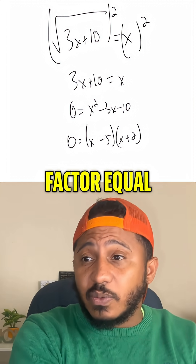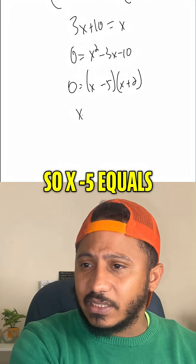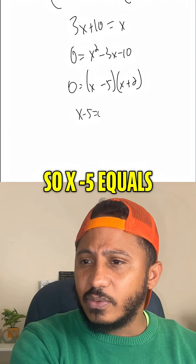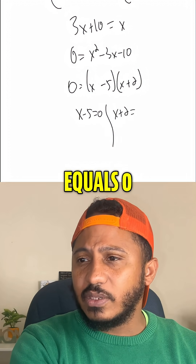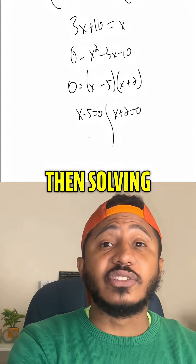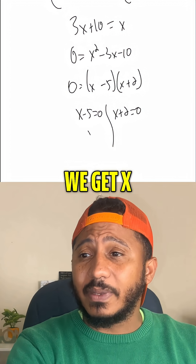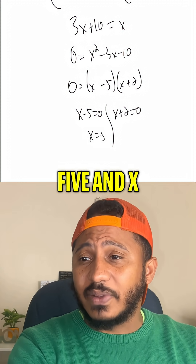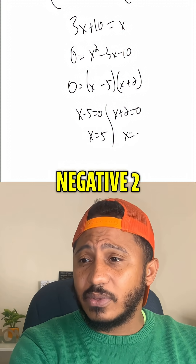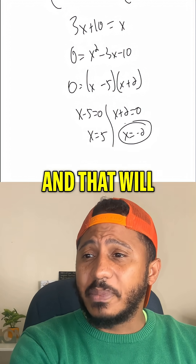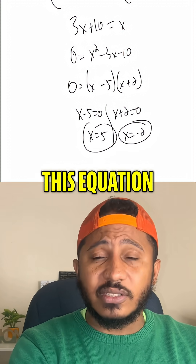Set each factor equal to zero: x minus 5 equals 0, and x plus 2 equals 0. Then solving each of these separately, we get x equals 5 and x equals negative 2. And that would be our two solutions to this equation.